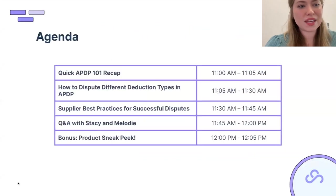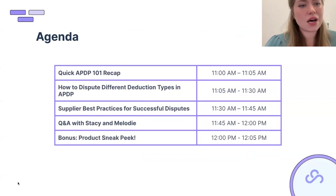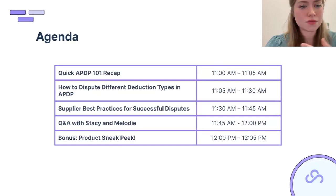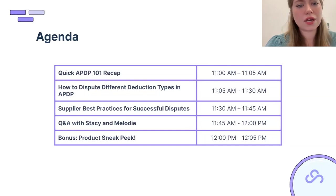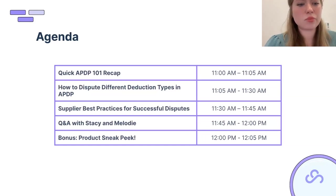Here's our agenda for today. We'll do a quick recap of the 101 webinar, talk about how to dispute the different deduction types in APDP, cover best practices to make your disputes as successful as possible, and then have a Q&A with Stacy and myself at the end. After that hour of content, we'll cover who Supply Pike is and give you a sneak peek into how we can help with your Walmart deductions.